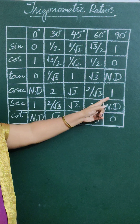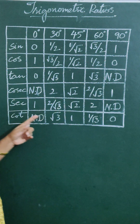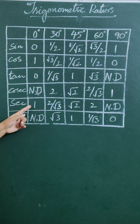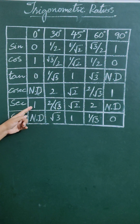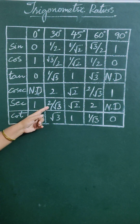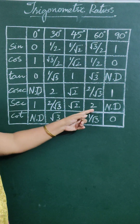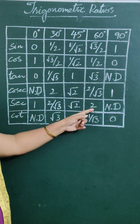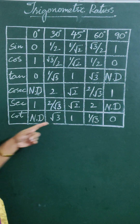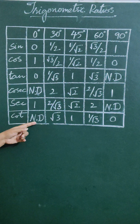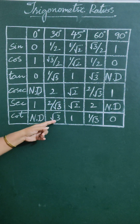cosec 90° = 1. sec 0° = 1, sec 30° = 2/√3, sec 45° = √2, sec 60° = 2, sec 90° is not defined.